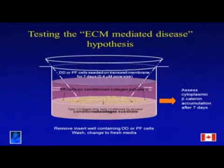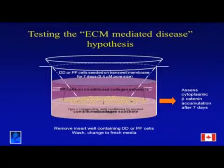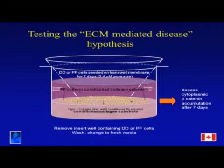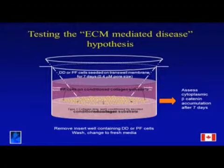To test this, we used a transwell system filled with type 1 collagen. Dupuytren's disease cells or PF cells were placed on top of the membrane, unable to escape but embedded in the collagen so they could secrete into it. We allowed them to do that for seven days, then removed the transwell. To address secretion into media, we changed the media. We then put patient-matched palmar fascia cells onto this now-conditioned collagen substrate, allowed them to grow for seven days, and asked: does cytoplasmic beta-catenin accumulation change?